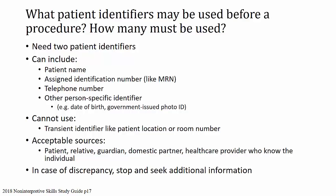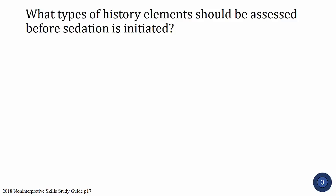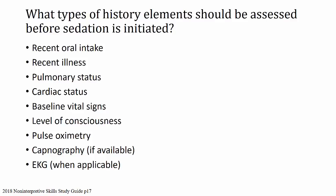Next question: what types of history elements should be assessed before sedation is initiated? You need to know things like recent oral intake for risk of aspiration, recent illness, pulmonary status, cardiac status, baseline vital signs, level of consciousness, pulse oximetry, capnography if available, or EKG when applicable. In general, you want to know the patient's status, make sure you've identified any risks, and especially any reasons why you may want to defer to anesthesiology — if it's kind of beyond the scope of a radiologist.